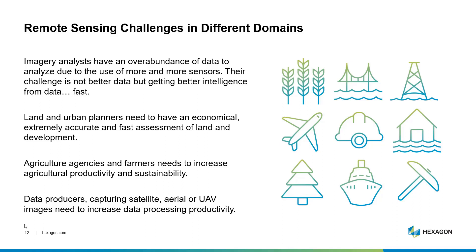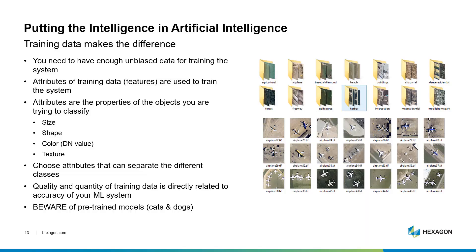Remote sensing is used in many industries, but each of those industries has challenges. Whether you are an urban planner, work in agriculture or forestry, or produce data, the need to process data efficiently and quickly to save time and money — without sacrificing accuracy — is important. In machine learning, the training data is the most critical part. You need enough unbiased data to train the system effectively, with attributes that are features used to train the system — the properties of the objects you're trying to classify — so you can distinctly differentiate between the different sizes, shapes, colors, and textures of your data. The quality and quantity of training data is directly related to the accuracy of your output.